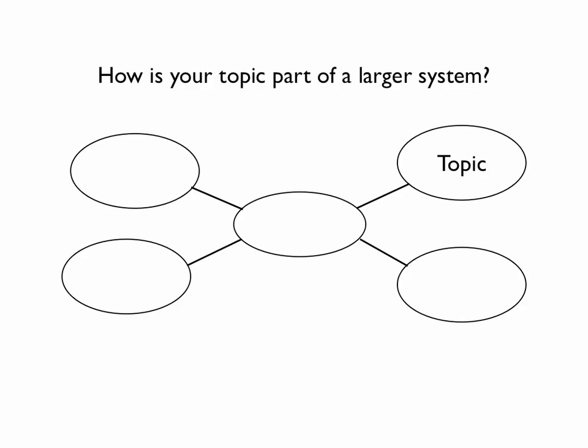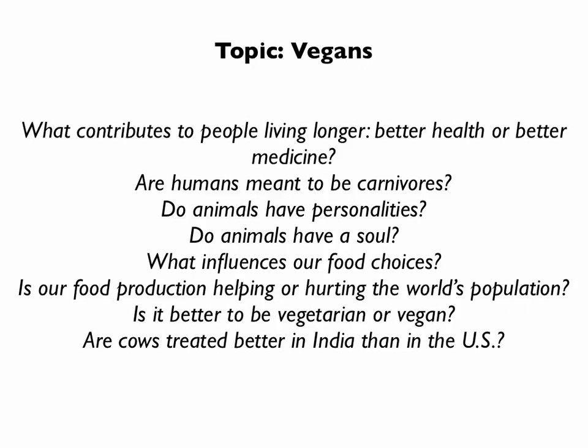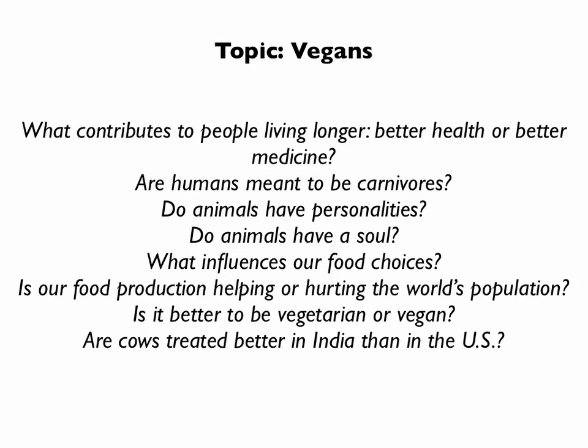Next, think about how your topic is part of a larger system. Think of your topic as a chapter within a larger book. What are those larger topics you can connect your topic to? For example, with vegans, I can connect it to health, animal rights, food production, and vegetarianism, and write questions about those larger categories of which my topic is a part. Now try this for your own topic — how is your topic part of a larger system, and what questions can you write about that larger system?